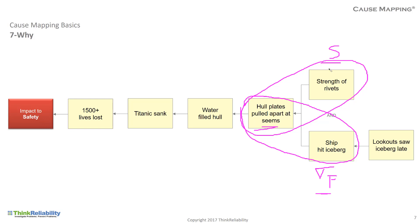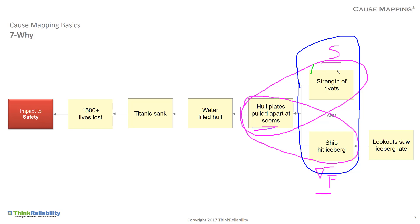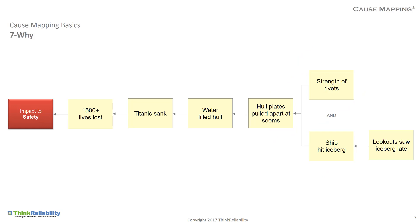The answer is both. The benefit of knowing that both of these causes are required to produce this effect — they're both required for the effect to occur — is that you can control this one or you can control this one. Meaning, if you just don't hit the iceberg, the plates wouldn't pull apart. But if you did hit the iceberg and the rivets were stronger, you can mitigate the risk or prevent the plates from pulling apart. So the benefit of parallel relationships is it gives you different solution options as you work through the analysis of a problem.